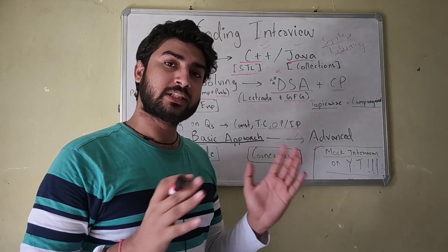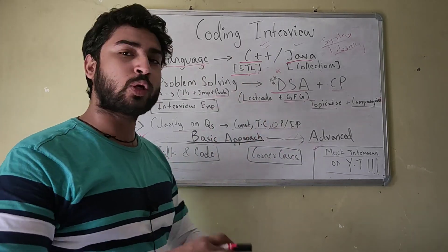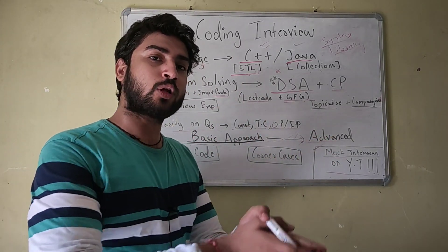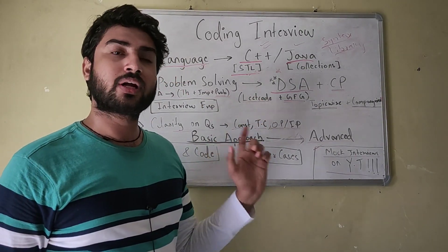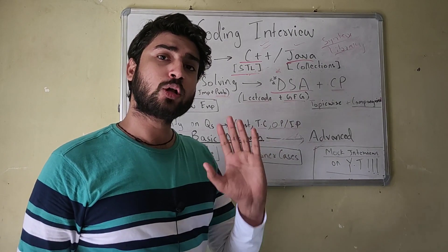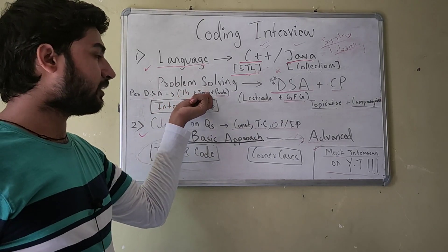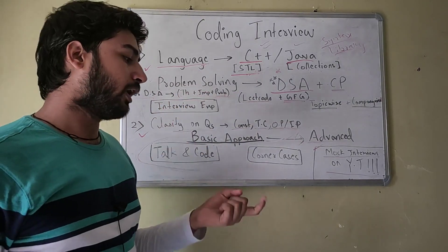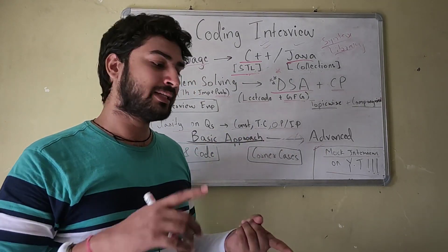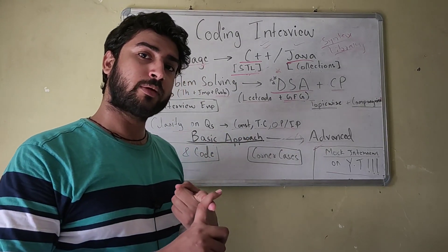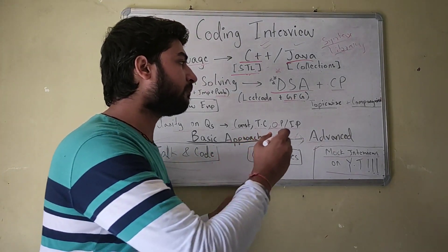A major mistake that a lot of students make is solving problems randomly. People go on LeetCode and solve random problems, and even after solving a lot of problems they still don't have much idea about DSA. You should not be doing that — you should solve problems topic-wise. For every data structure, learn the theory, learn the implementation, and solve problems. If you are solving linked lists, solve linked list problems, then move on to the next data structure. If you are learning dynamic programming, solve dynamic programming problems, then move on to the next algorithm.